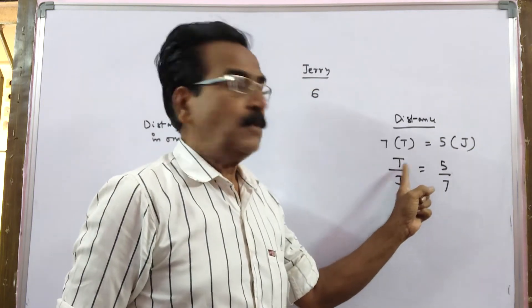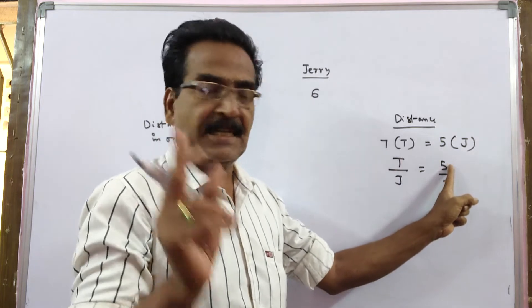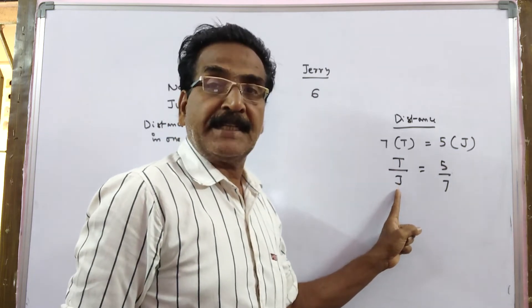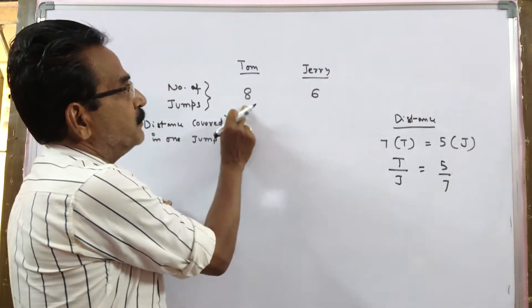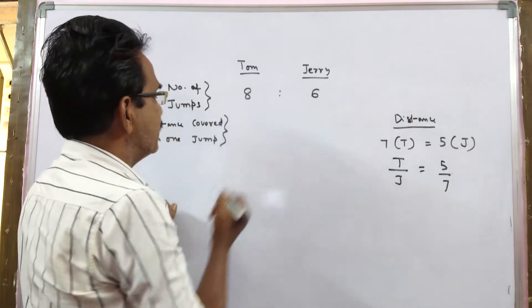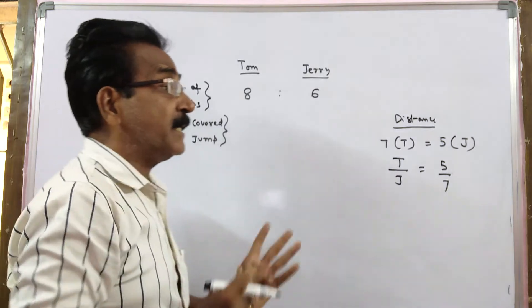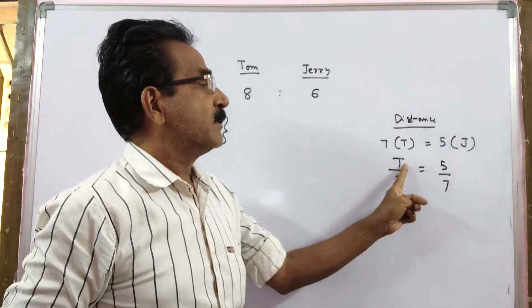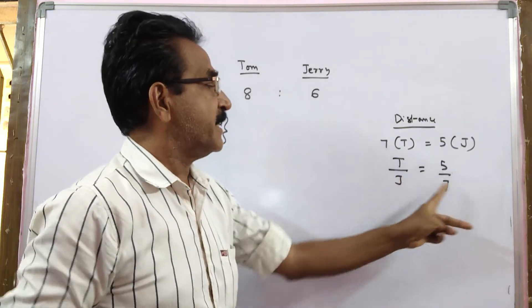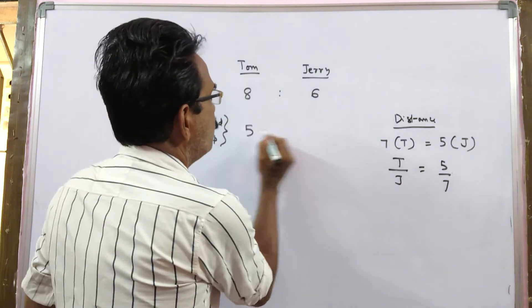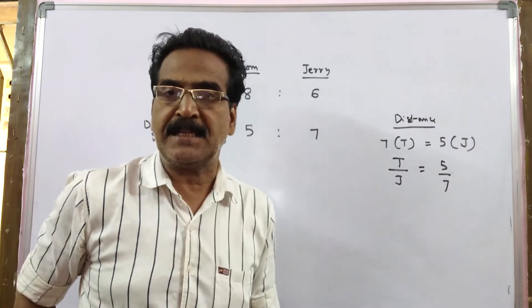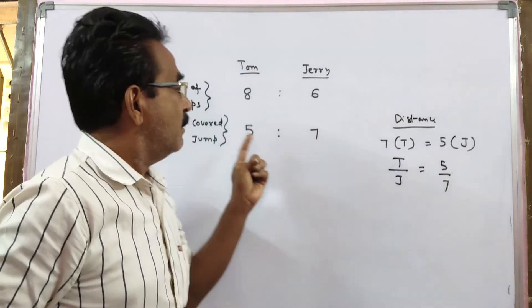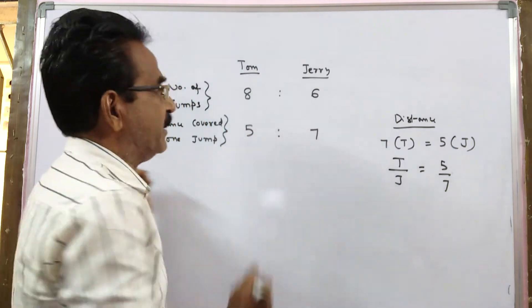It means Tom goes 5 meters in 1 jump whereas Jerry goes 7 meters in 1 jump. So, number of jumps ratio 8 is to 6 and the distance covered by them in 1 jump. See, Tom 5 meters, Jerry 7 meters. 5 is to 7. The distances covered by Tom and Jerry in 1 jump are in the ratio 5 is to 7.